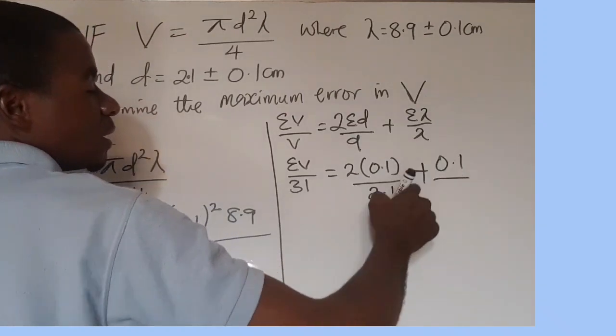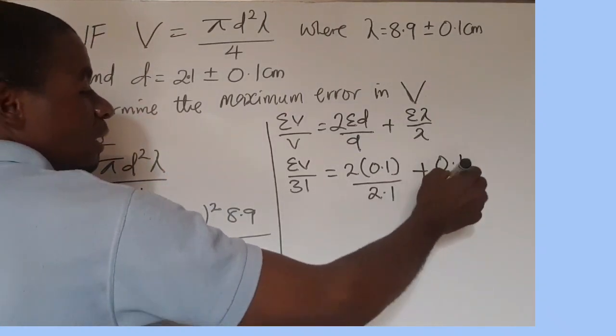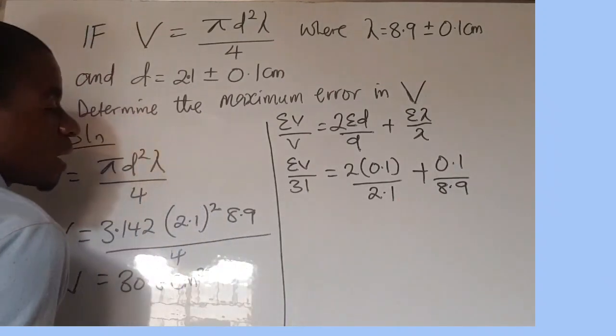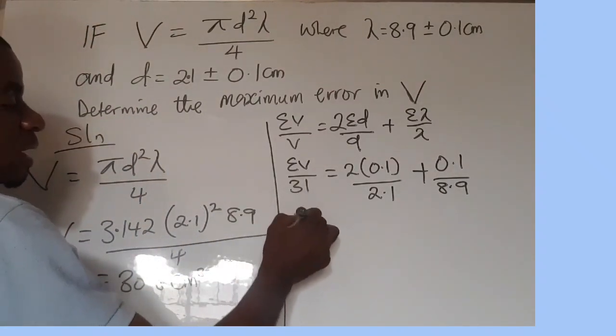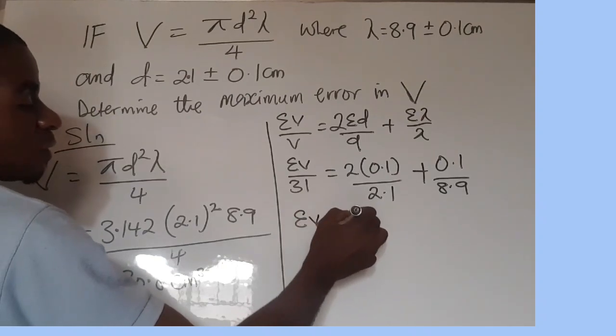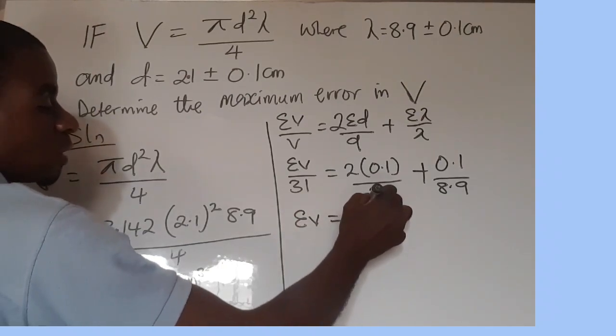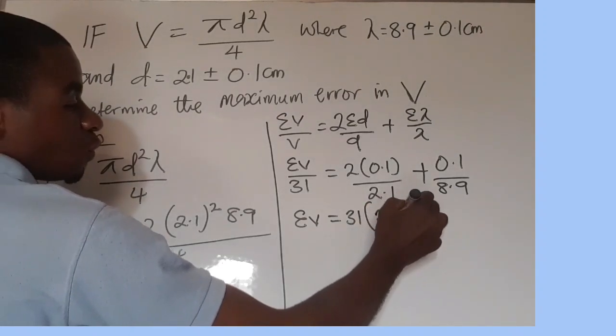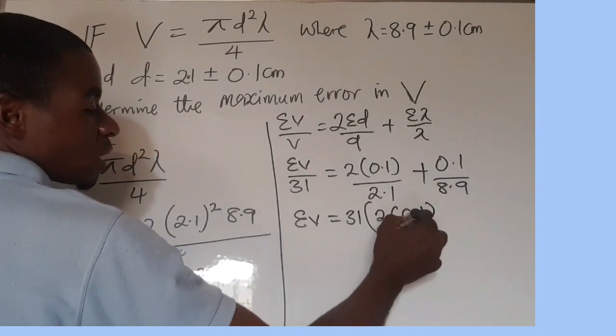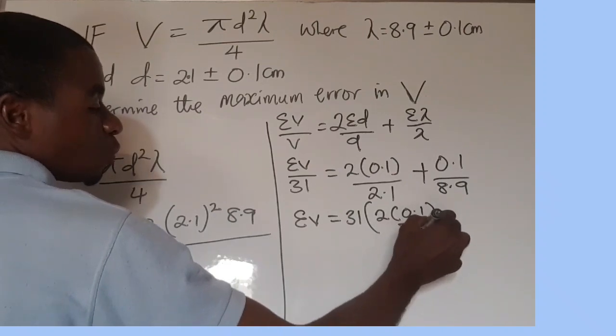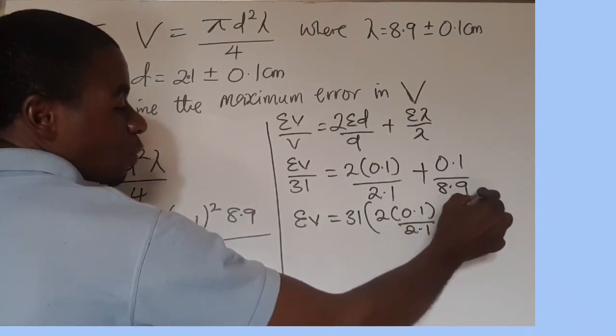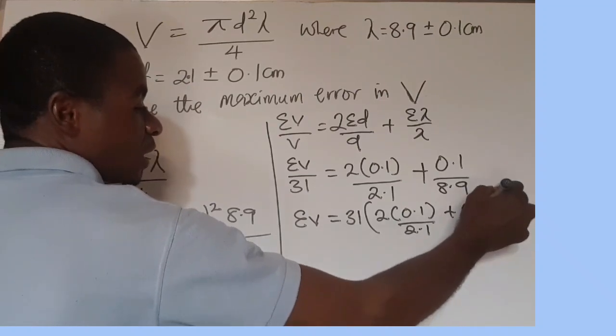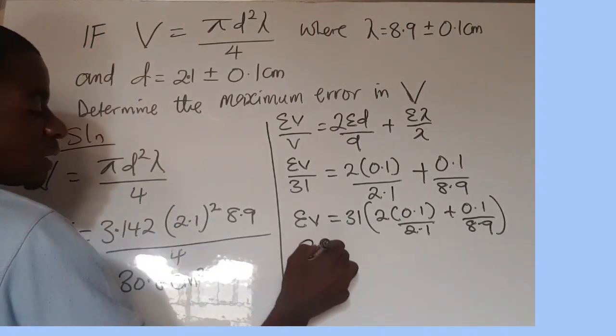So from here, we can say the error in V is equal to 31 into 2 into 0.1, close the bracket, all over 2.1, plus 0.1 all over 8.9, close the bracket. If we evaluate it,